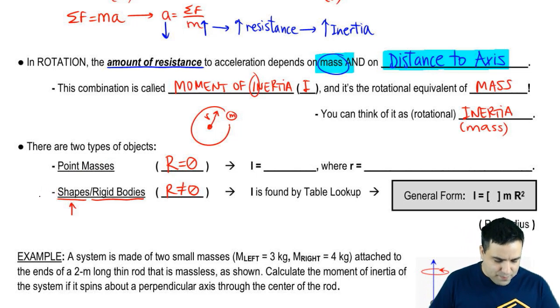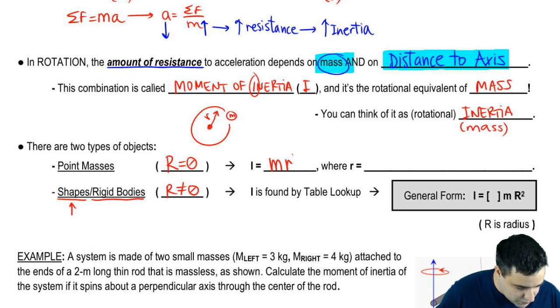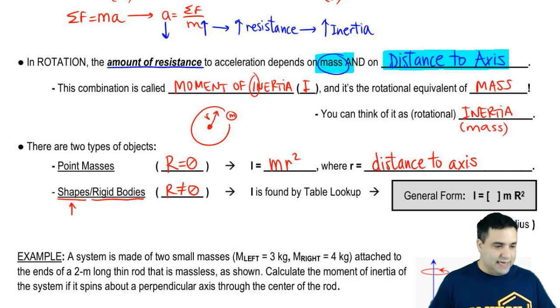Now, if you have a point mass, the moment of inertia is given by an equation, which is mr squared. M is the mass of that object. And r, again, is the distance to the axis of rotation. Distance to the axis.